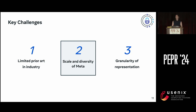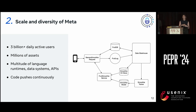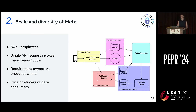The second big problem is the scale and diversity of Meta's systems. We have more than 3 billion daily active users, millions of assets — things like tables, requests, functions, and back-end services doing online and offline processing. We work across a multitude of language runtimes, data systems, and different APIs, and code is pushed continuously throughout the day. We also have more than 50,000 employees, and a single API request can often invoke many different teams' code, representing interesting ownership boundaries.